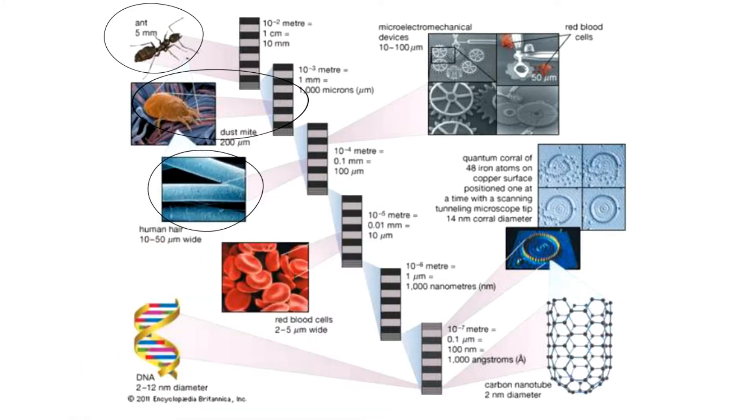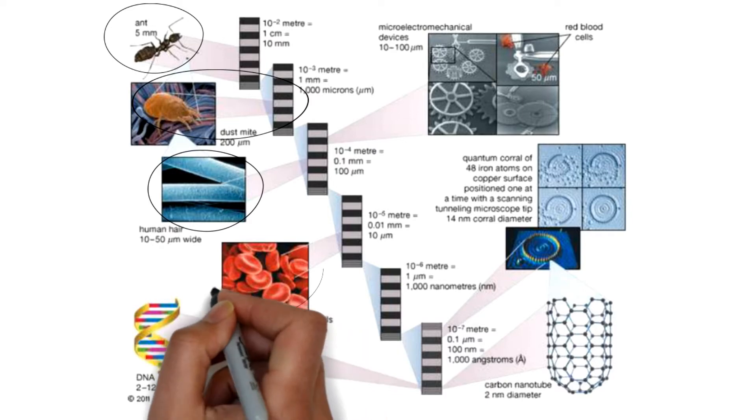Going deeper again, the human hair. The size of the human hair is 0.1mm, that is 100 microns, which is very smaller than the previous one, the dust mite.